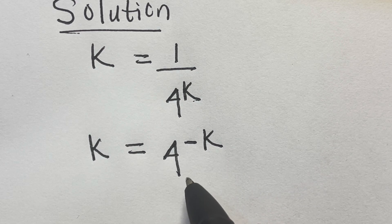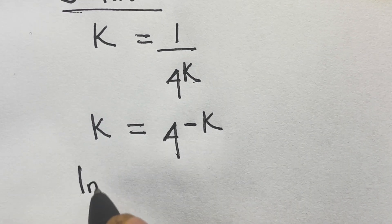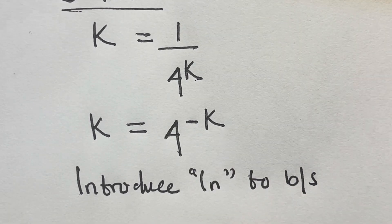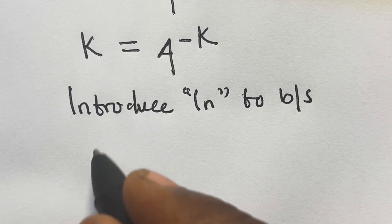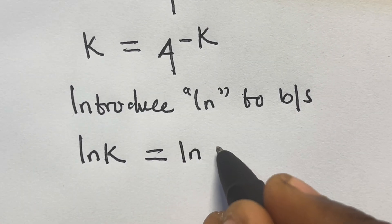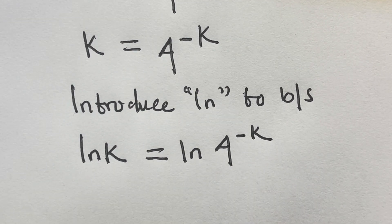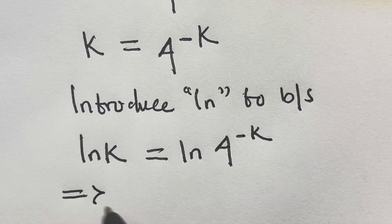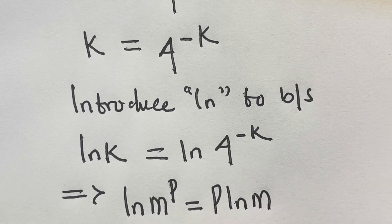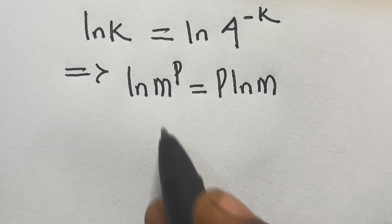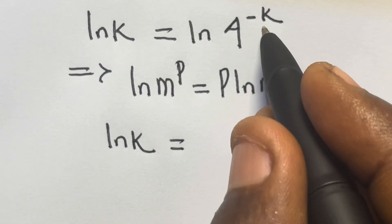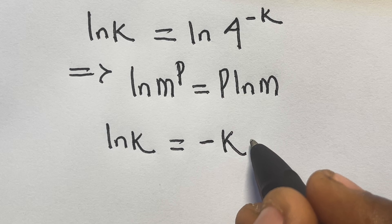So from here, we introduce natural log — ln — to both sides. We have ln k equals ln of 4 raised to the power minus k. Recalling that ln of m raised to the power p equals p·ln m, applying this we get ln k equals minus k·ln 4.